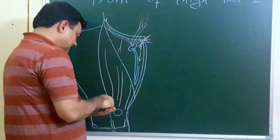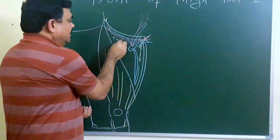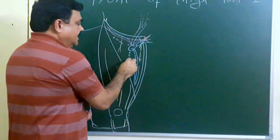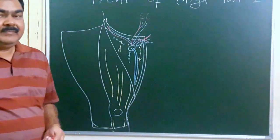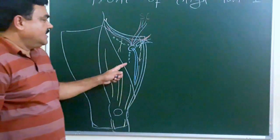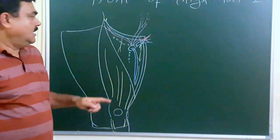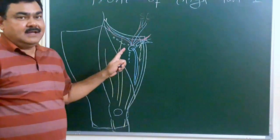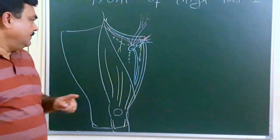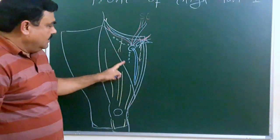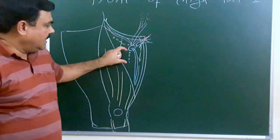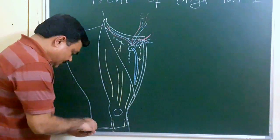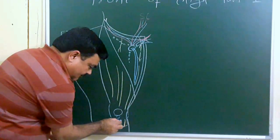Here you will find the superficial group of inguinal lymph nodes, which are present in a P-shaped manner. The venous drainage and lymphatic drainage have been discussed in a separate lecture. The lymph nodes are arranged as superior lateral, superior medial, and inferior groups. There is also a bursa present here and one present here.